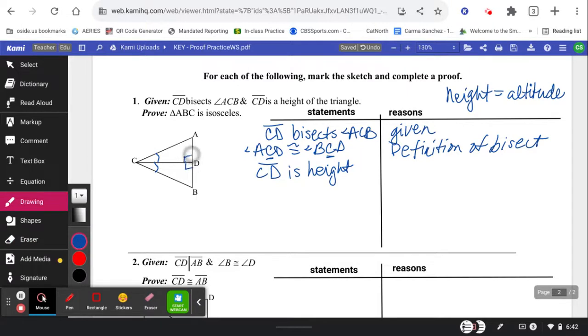So when I'm told that a height has been made, I know that this little angle right here is formed. So if there's a right angle there, those are both 90 degrees. And so I'm going to go ahead and state that angle CDA is congruent to angle CDB. And that's definition of height.